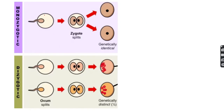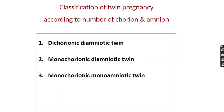In monozygotic twins, a single ovum is fertilized by a single sperm forming a single zygote, which then splits to produce identical twins. In dizygotic twins, two separate ova are fertilized by two sperm, forming two separate zygotes which develop into non-identical twins.